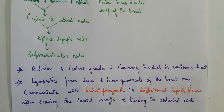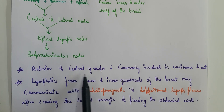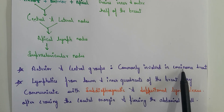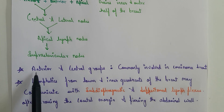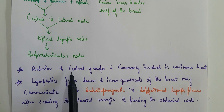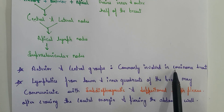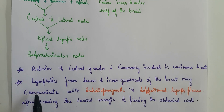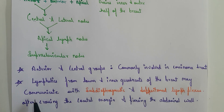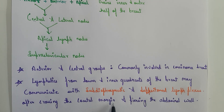Now let us talk about two more important points. The anterior and the central groups of lymph nodes are commonly involved in carcinoma of the breast — this is very important. Additionally, lymphatics from the lower and inner quadrants of the breast may communicate with the sub-diaphragmatic and the subperitoneal lymph plexus after crossing the costal margin and piercing the anterior abdominal wall.